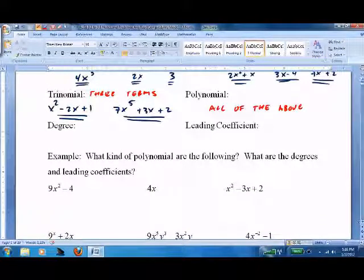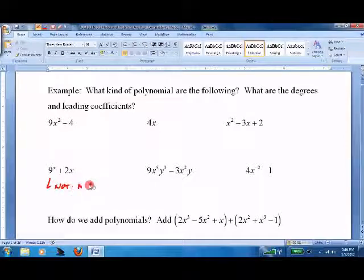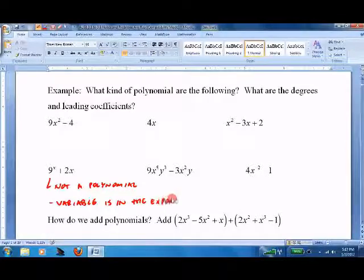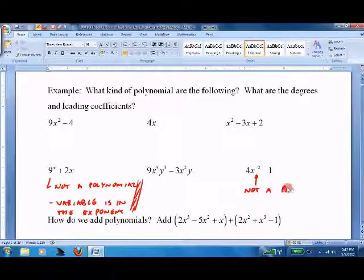There are certain things that are not polynomials. This is not a polynomial because variables are in the exponent. And this would not be a polynomial because the exponent is negative - no negative exponents.